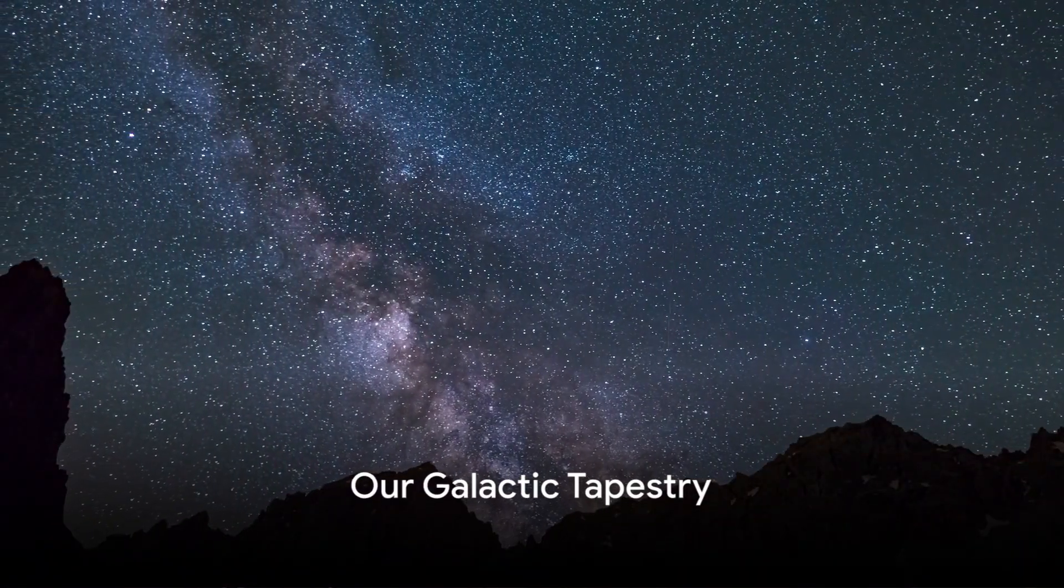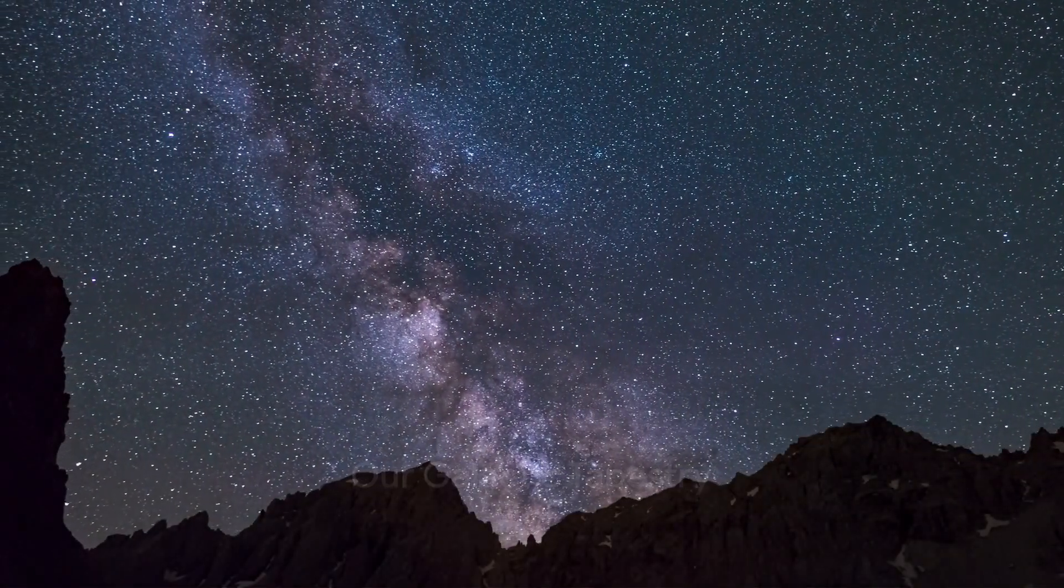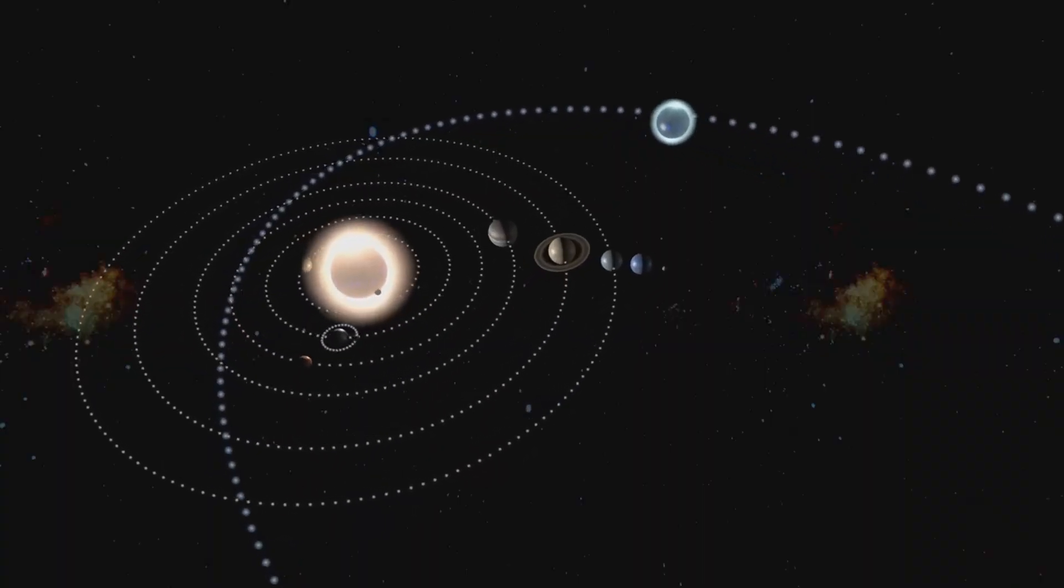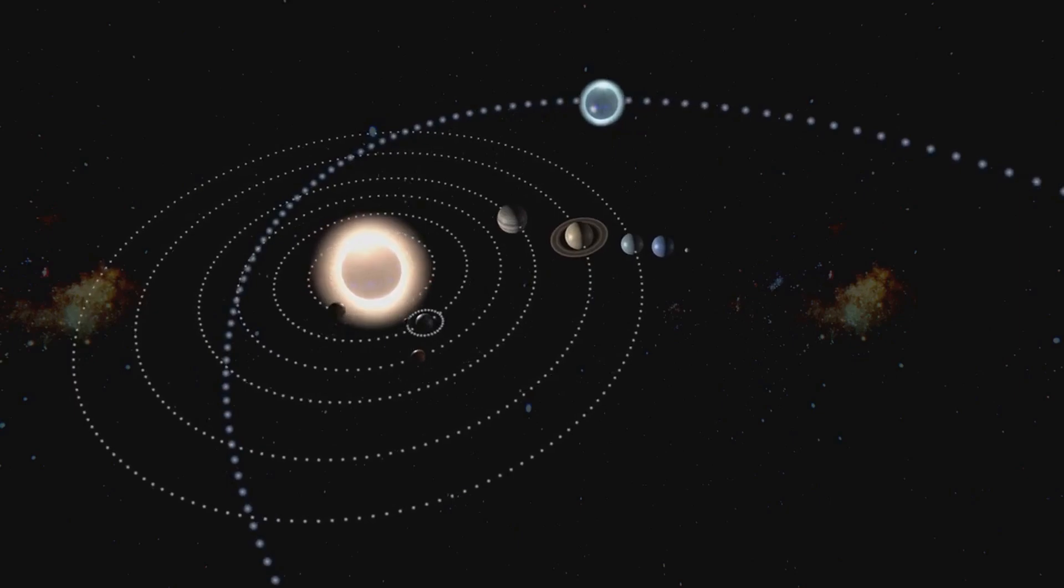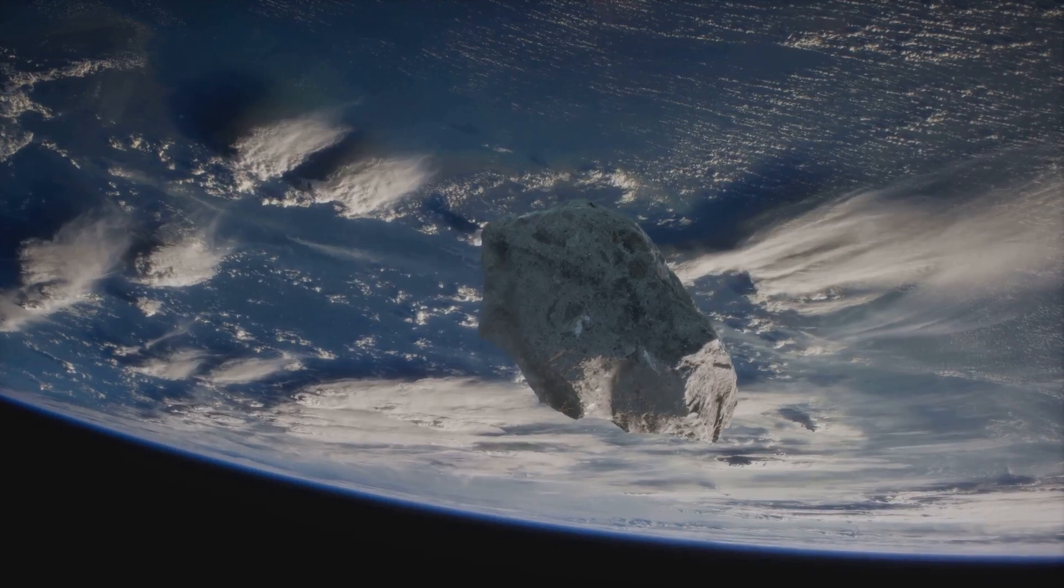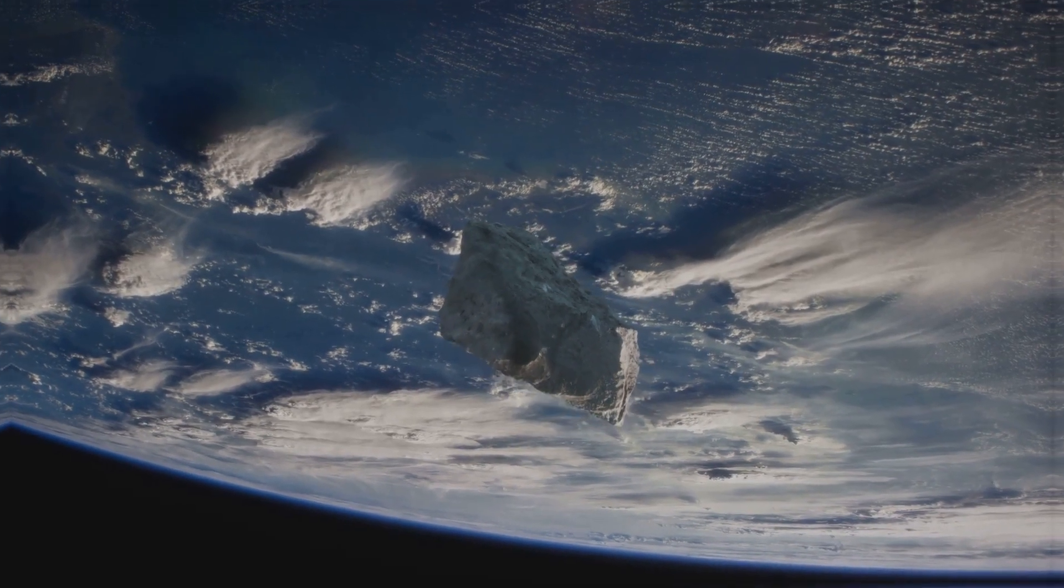Picture the Milky Way as a vast cosmic tapestry, and we're right in the middle of it. Our solar system, led by the sun, dances along the edge of the Orion arm, nestled between two spiral arms. This unique position shields us from cosmic threats, creating a stable environment for life to thrive.